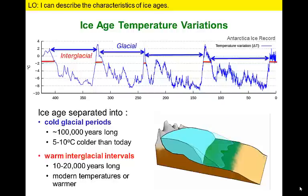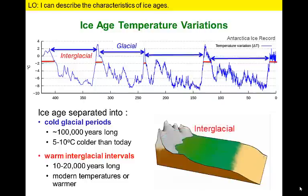These alternating cold and warm intervals reflect the advance and retreat of glaciers. The interglacials last for 10,000 to 20,000 years. We may actually be in an interglacial now, or maybe the ice age has ended — we'll just have to wait about 10,000 years to find out.